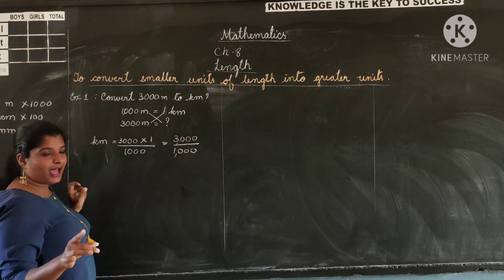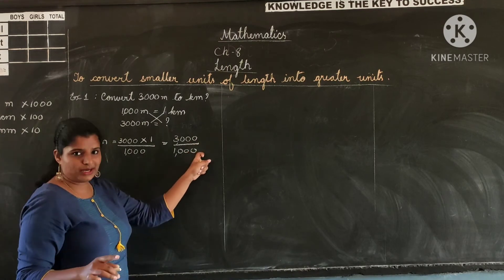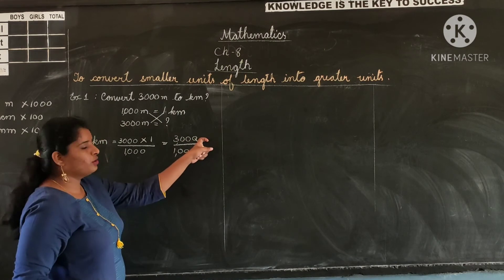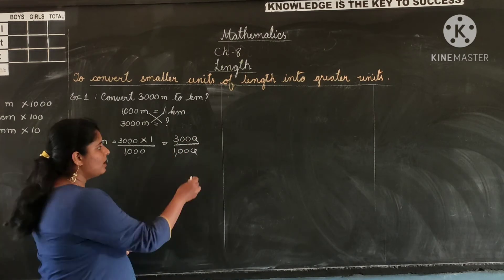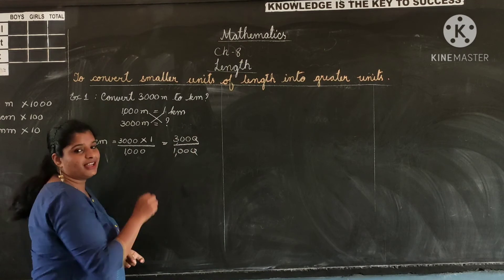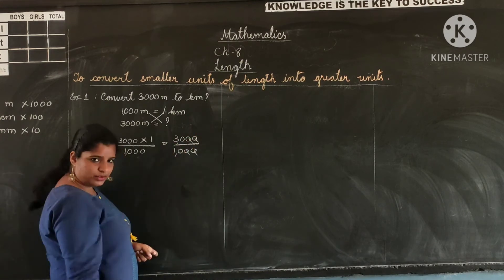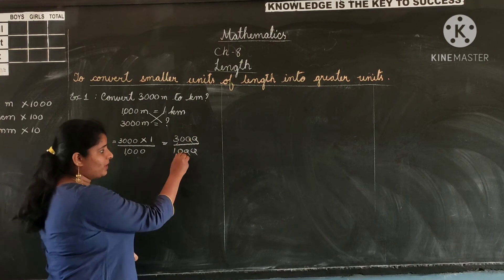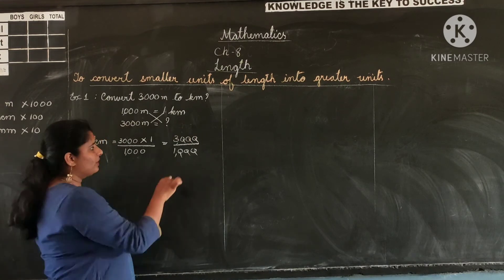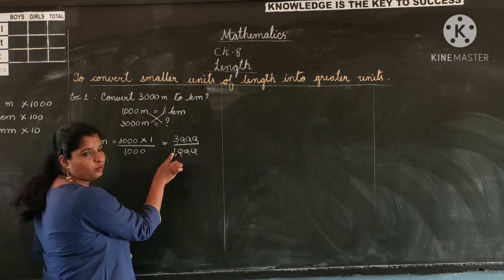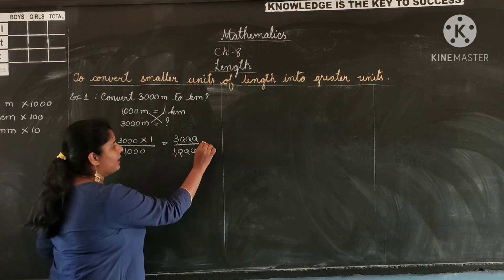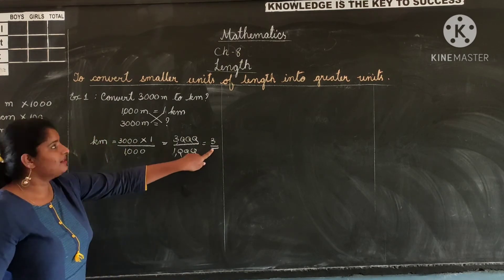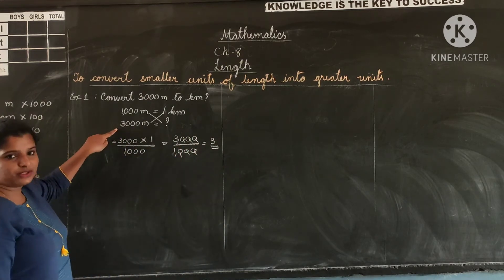The number with the question mark becomes the denominator, which is 1000. So we get 3000 divided by 1000. When you have zeros in the units, you can cancel them. Canceling the three zeros, we are left with 3 divided by 1, which equals 3. So 3 kilometers make 3000 meters.